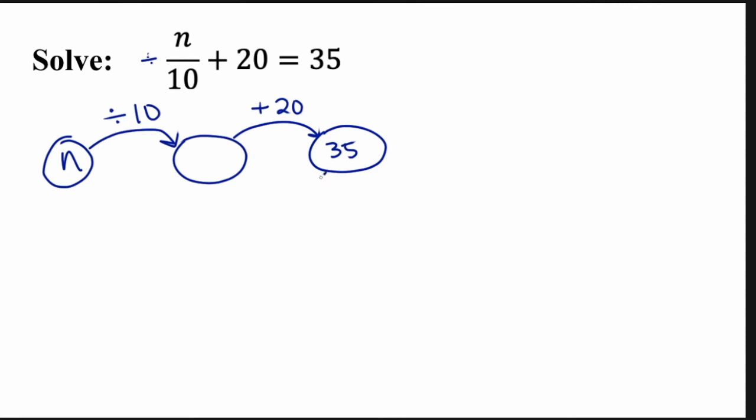Now going in reverse order, I'm going to subtract 20. That'll get me to 15 times 10 is going to give me N equals 150. Okay, so now time saver way, I don't have time to make a flowchart. I'm just going to rewrite the equation over here. And I hope you are following along and writing as well.